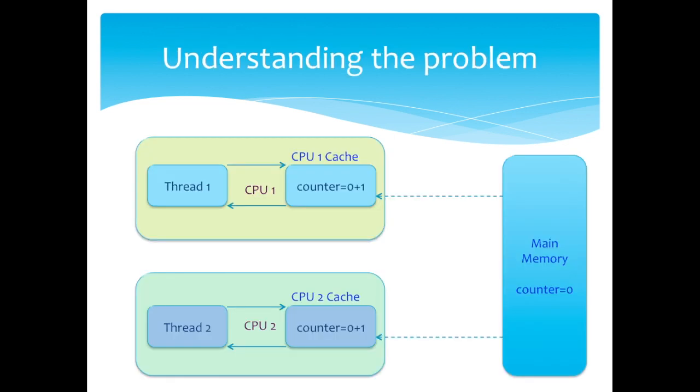In this case where multiple threads are present, a volatile variable is not enough. If we try to understand this, thread 1 reads a shared counter variable with the value 0 into its CPU cache.